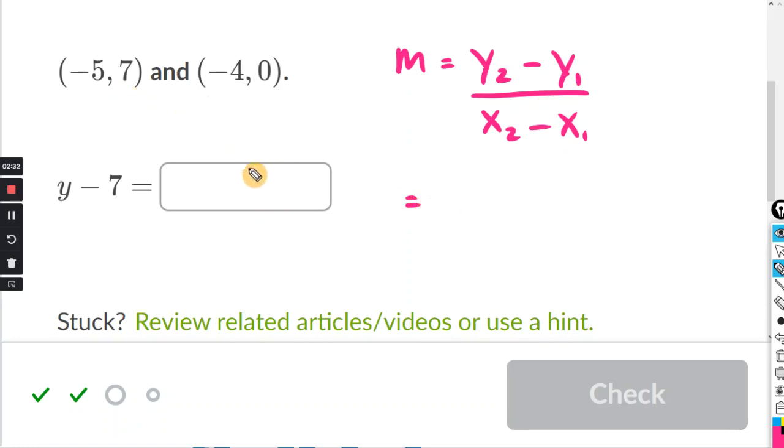So the order you subtract doesn't matter, but you have to go the same way. Let's do the y's first. I am going to do 7 minus 0. Remember the y-coordinate is always the second number in the coordinate. So 7 minus 0. And now we have to subtract going the same way with the x's. So the x is the first one, negative 5 minus negative 4.